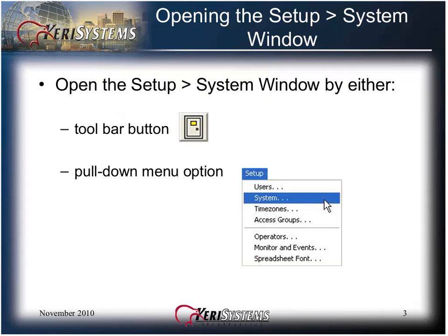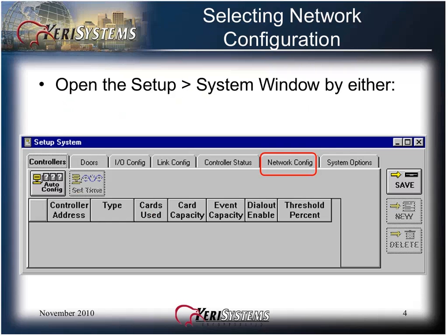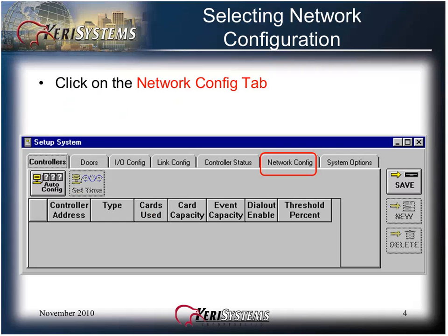To access the network config screen, open the Setup System window by either clicking on the toolbar button or from the pull-down menu, choose Setup and then click on System. Then click on the Network Config tab within the Setup System window.